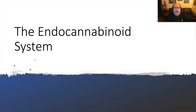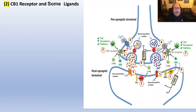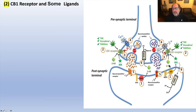The next module will bring us to the endocannabinoid system. We'll talk about every aspect of the endocannabinoid system, starting with the endocannabinoids anandamide and 2-AG. We'll talk about the cannabinoid receptors — the CB1 receptors — the signaling of the receptors and how they affect potassium and calcium channels, as well as the synthesis, breakdown, and transport of the endocannabinoids.